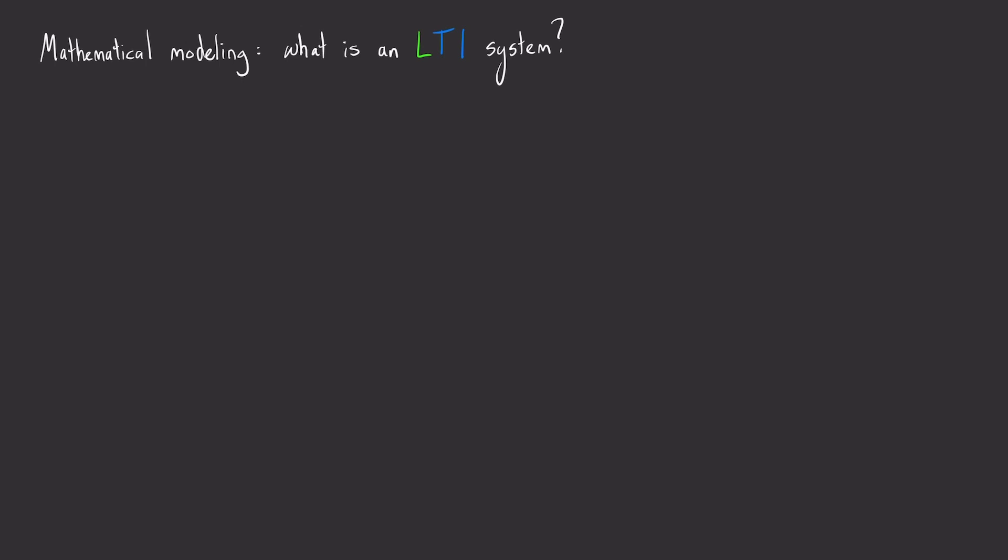LTI stands for linear and time invariant system. The property of linearity says that if you send in a superposition of two inputs, then the output should just be a linear combination of them both. And here alpha just is scaling your input, u is your input, and f is the linear transformation that your system applies onto your input.